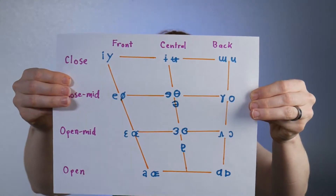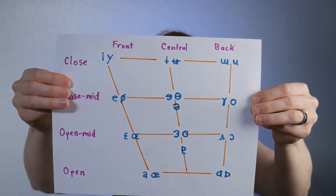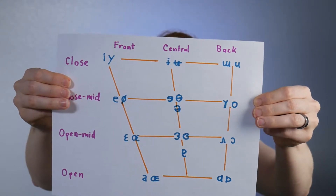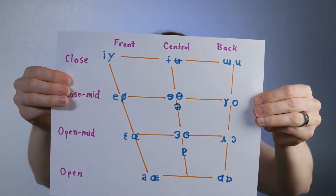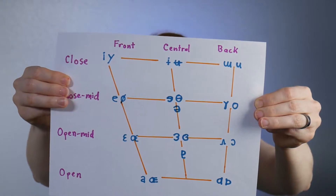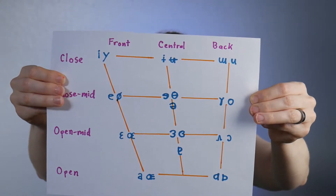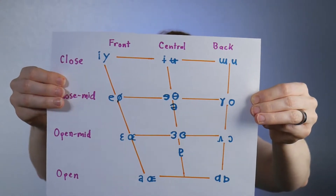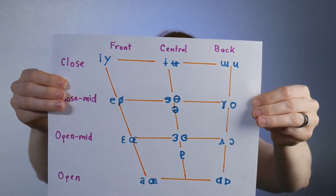Hi, I'm Dr. Wordperson, and today we're going to talk about the International Phonetic Alphabet and vowels. Basically, linguists use the IPA in order to transcribe all the sounds in the world's languages consistently. I'm going to teach you what all the squiggly little symbols mean and how to pronounce them with your mouth.